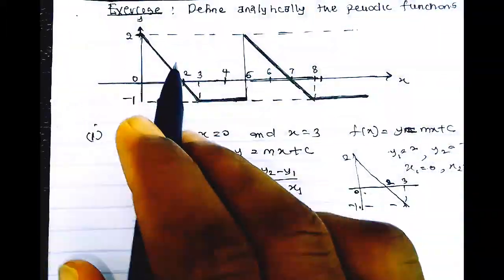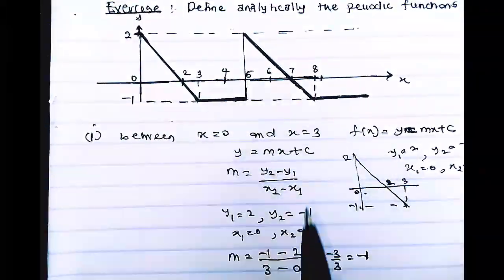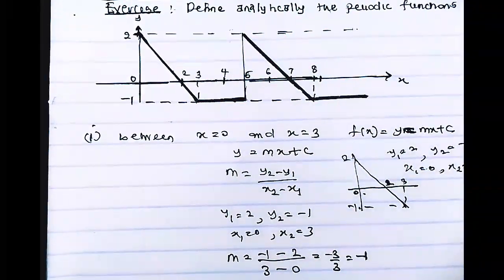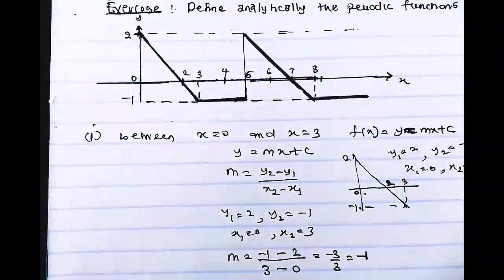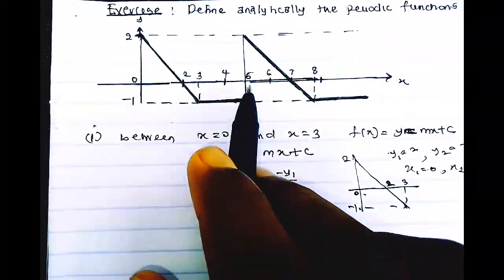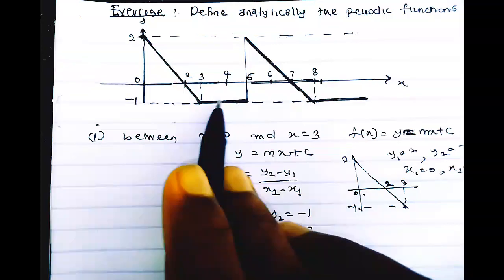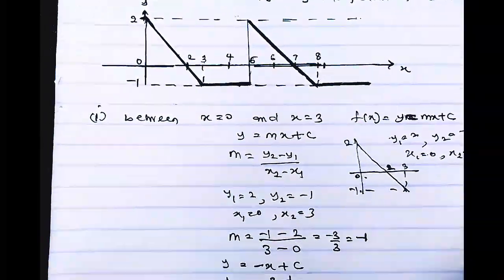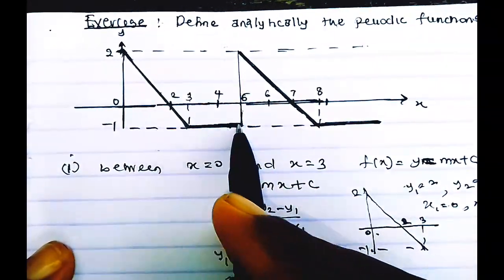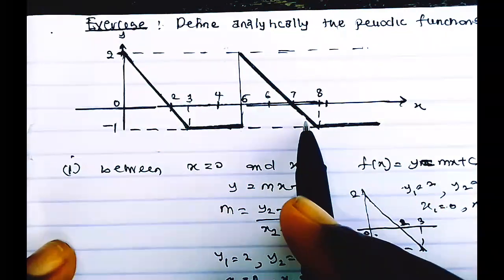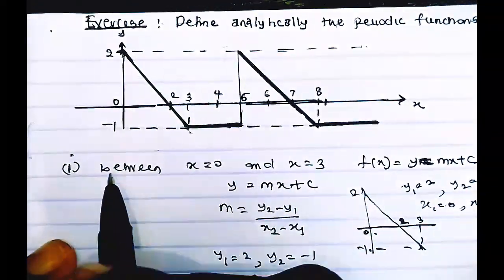We've analyzed the first condition — the slanted straight line. Now we need to analyze the second segment. Because it's a periodic function, once you analyze the first two lines on your graph, the pattern repeats constantly throughout the rest of the graph — to infinity. So let's take the second condition. Once you analyze it, you know it's the same thing repeating because it's periodic.